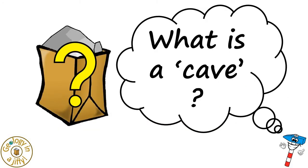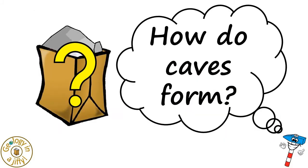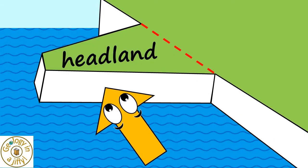What is a cave? Caves are natural voids in the ground, big enough for a human to enter them. How do caves form? Let's look at our headland from the side.